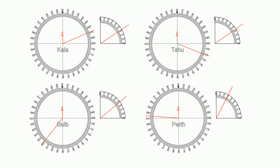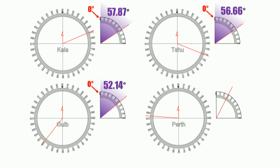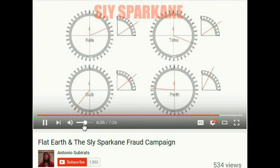Top left should be 57.87 degrees, top right should be 56.66 degrees, bottom left should be 52.14 degrees, bottom right should be 28.66 degrees. Every single one of these compasses that you have made, Slice Sparkane, is wrong. Not a single one of these elevations is correct, is it?